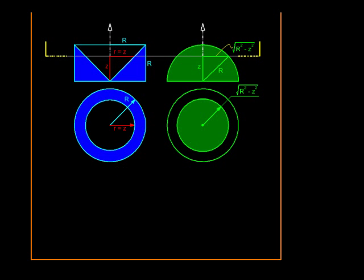So area of this would be π capital R square, the outer radius square minus the inner radius square, z square. While over here, it will be a simple matter of π r square where radius is this much. So this is the area of the circular cross section.